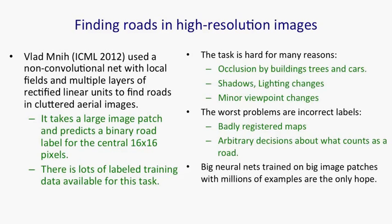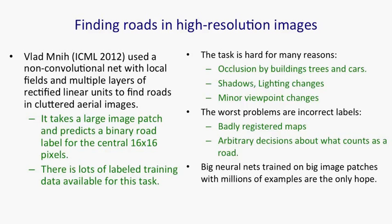Big neural nets trained on big image patches using millions of examples are the only real hope for doing a good job of this task. Here's what the data looks like — a part of Toronto. Above the aerial image are two patches extracted from it, and you can see it's not trivial to tell which pixels are road. On the right is the output of Vlad Mnih's system: green is correctly identified road pixels and red means things his system thought might be road that actually aren't — for instance, a parking lot that you can see why he might have mistaken for a road.